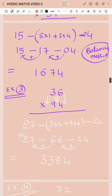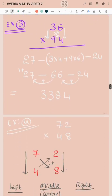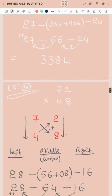Example 3: 36 into 94. First procedure: left side number, step 1, 3 into 9 is 27, write the result on left side. Draw a hyphen mark in the middle as center line. Then corners multiply: 3 into 4 plus 9 into 6 is 12 plus 54 equals 66. Next, right side number 6 into 4 is 24. Now 27, 66, 24. Balancing method: 4, 6 plus 2 is 8, 6 plus 7 is 13. Write 3 and carry 1. Two plus one is 3, so 3,384.